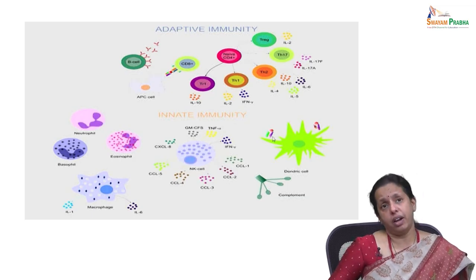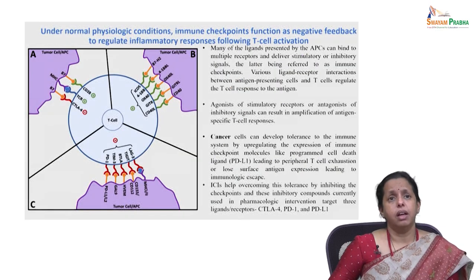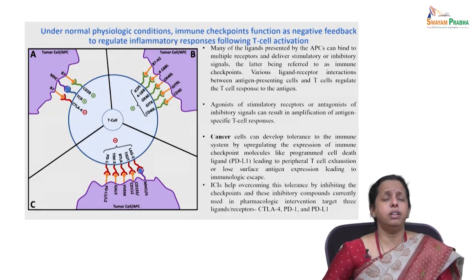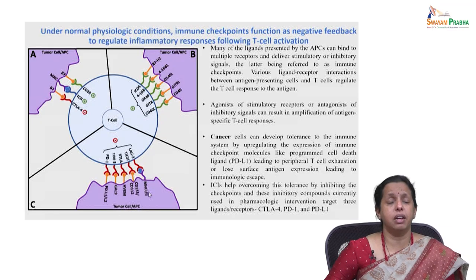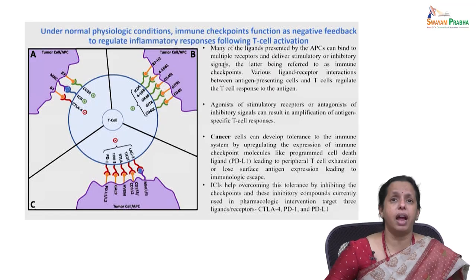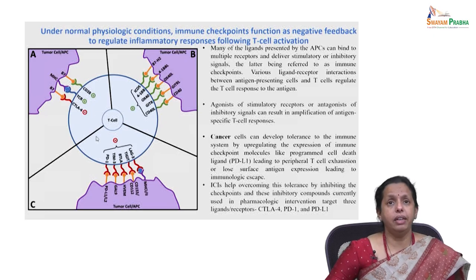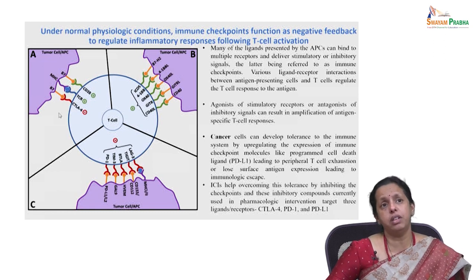Dendritic cells present antigens to helper T cells. Now, looking at how T cells and antigen presenting cells interact: there are fantastic receptors involved. Many ligands represented by APCs can bind to multiple receptors and deliver either stimulatory or inhibitory signals. These inhibitory signals are referred to as immune checkpoints.